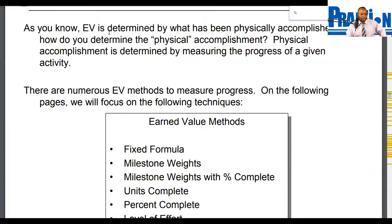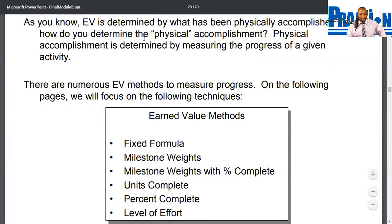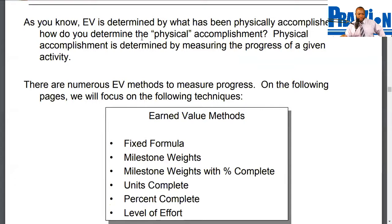As you know, earned value is determined by what has been physically accomplished. But how do you determine the physical accomplishment? Physical accomplishment is determined by measuring the progress of a given activity. There are numerous earned value methods to measure progress.